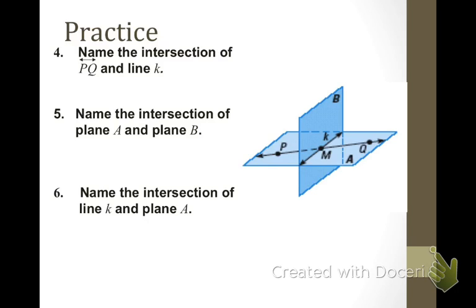Now, I've been given the figure, and I need you to name the intersection of line PQ and line K. First you have to visualize where PQ and line K are. And two lines always intersect to give you a point. So, where these two intersect is right there at point M. Notice I don't have to use the word point because a capital letter by itself represents a point.